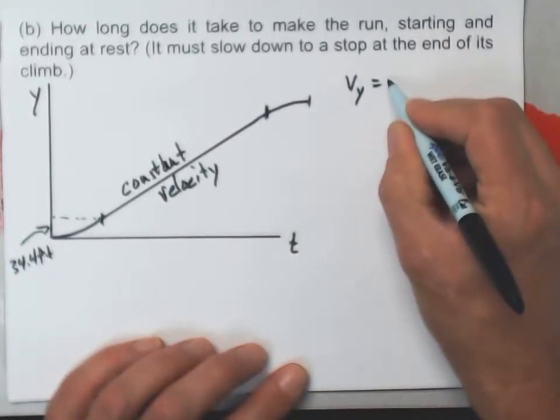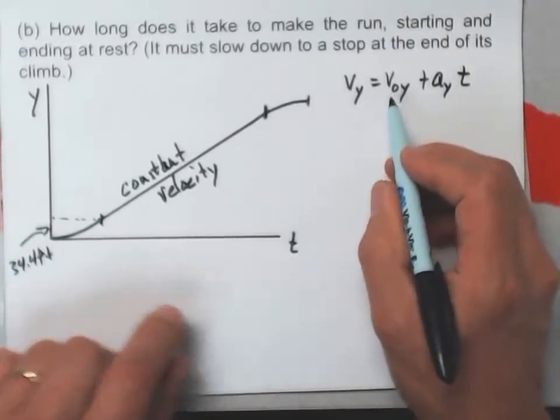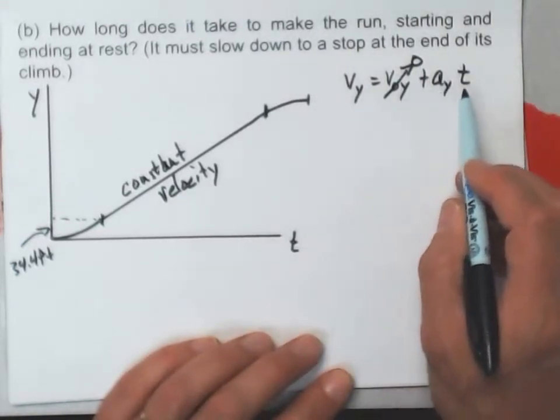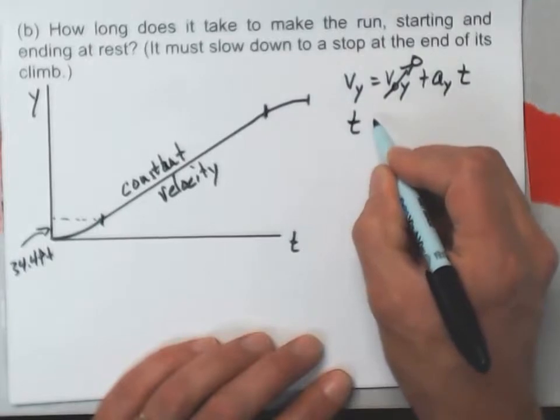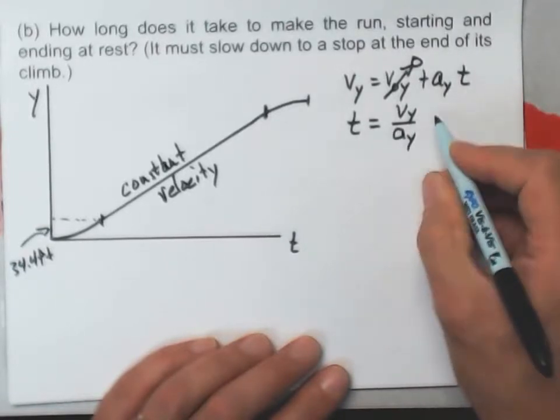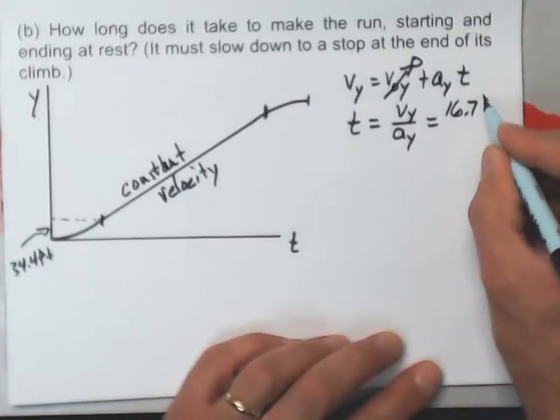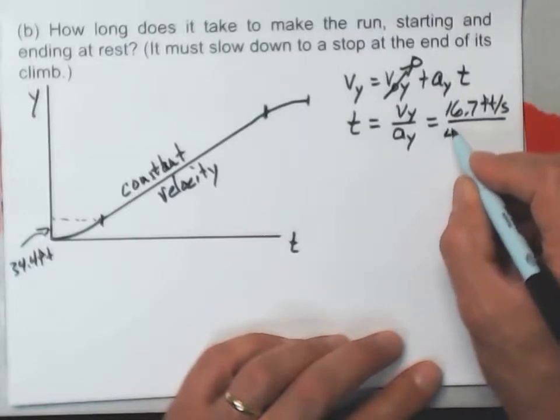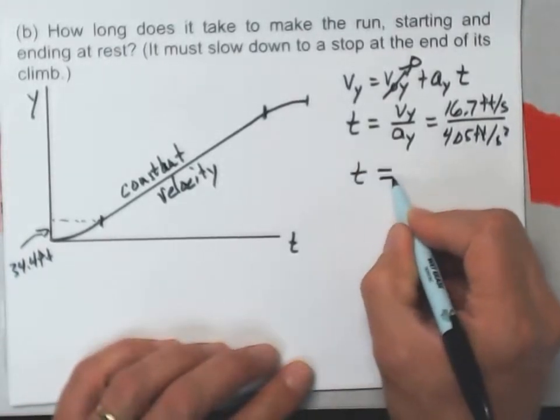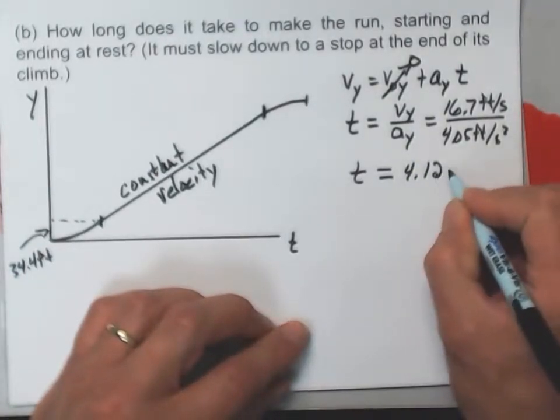On that first part, I never actually figured out how long it took to accelerate to the final speed. So let's go ahead and do that now. I'll be using v sub y equals v naught y plus a sub y t. V naught y is zero for this part, so I've got v sub y equals a sub y t. Or the time for that interval is going to be v sub y over a sub y, which will be that 16.7 feet per second divided by the 4.05 feet per second squared. And the time I get is 4.12 seconds.